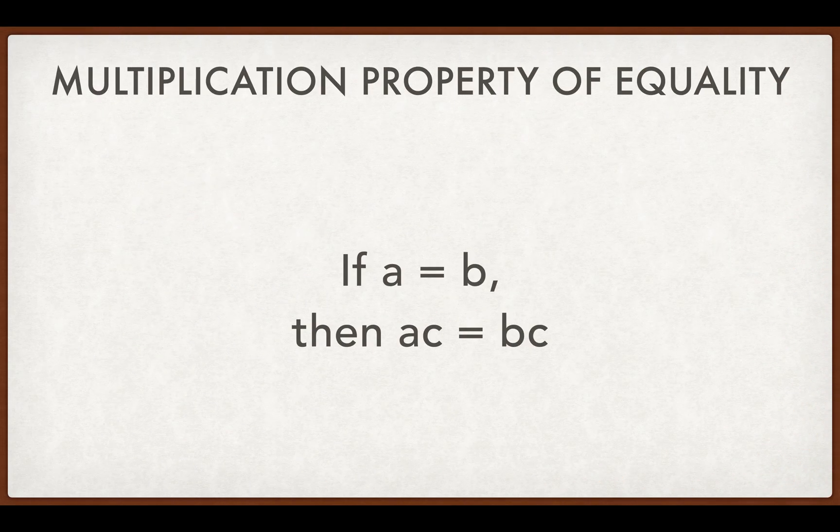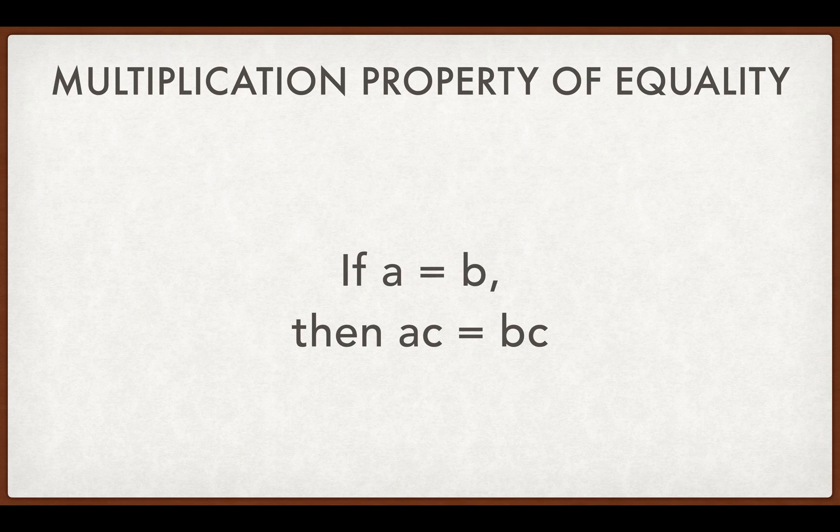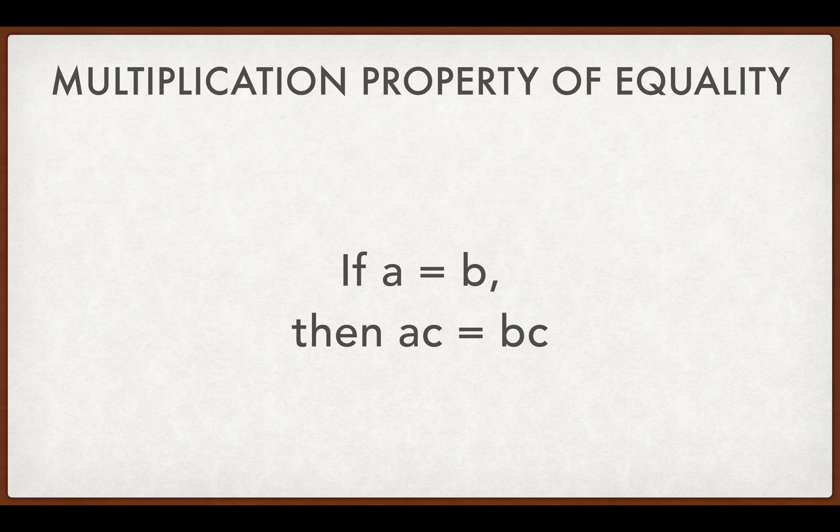Next, the multiplication property. If A is equal to B, then if I multiply both parts by the same amount, they should stay equal. If A equals B, then A times C is equal to B times C.